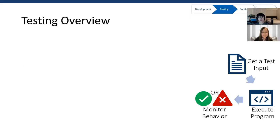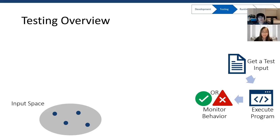Now the software goes to the next step: testing. During testing, we need an input to the program, execute the program, and check if the execution is correct or not. If not, a software bug is exposed. Unlike verification, testing does not and cannot cover the entire input space. The challenge is how to increase the chance of getting bug-triggering inputs.